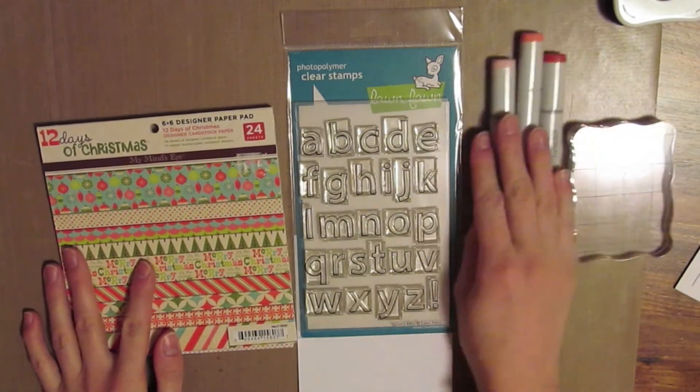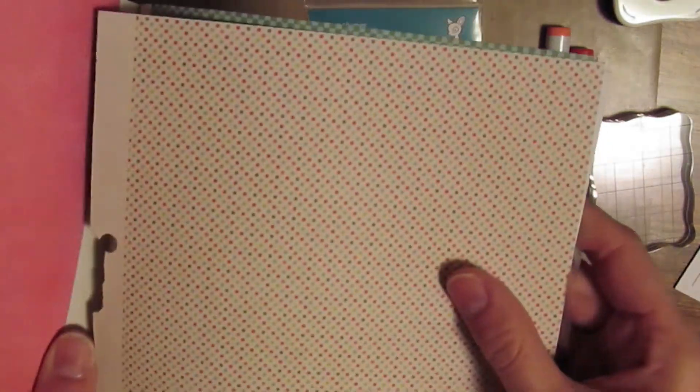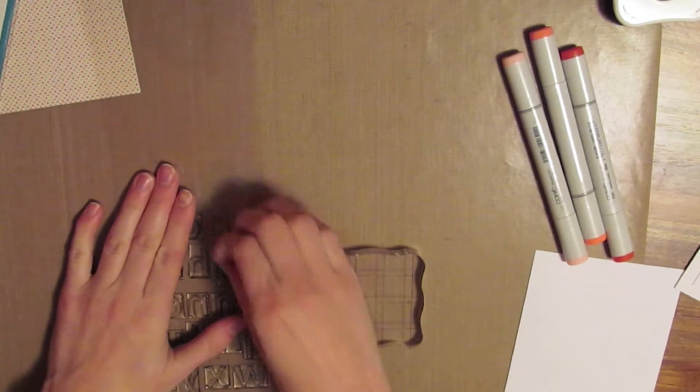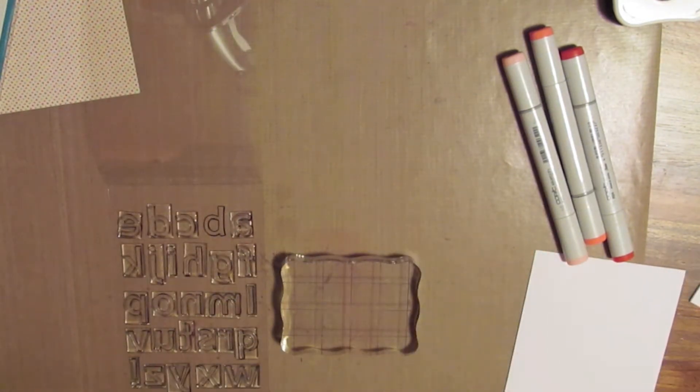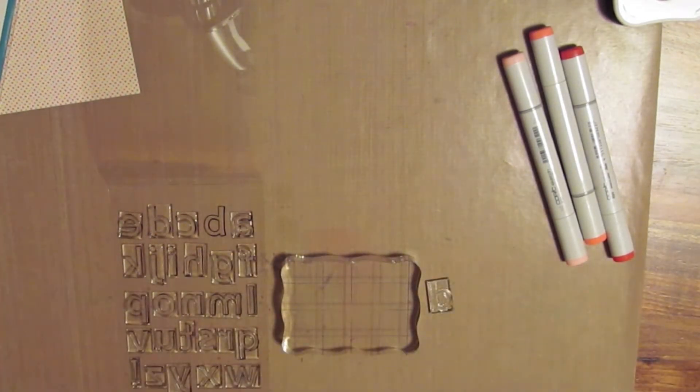So to get started, I have some supplies. I have the My Minds Eye 12 Days of Christmas 6x6 Paper Pad, and I picked out that polka dotted piece. And then I have the Alphabet Lawn Fawn Stamps. I'm just going to spell out Be Merry and stamp them onto a white piece of cardstock.